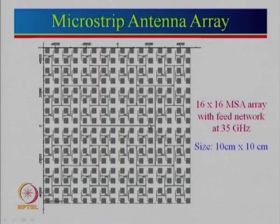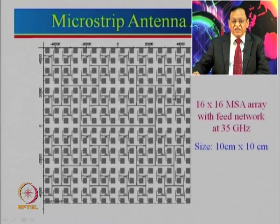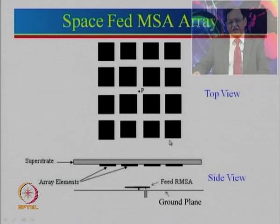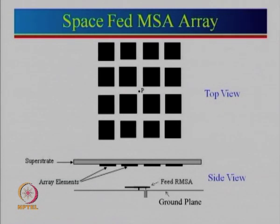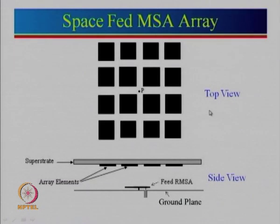This is an example of a microstrip antenna array — a 16 by 16 array with a total of 256 elements and a feed network. All these elements are fed by a microstrip line. This whole antenna was designed at 35 gigahertz, and all these elements fit in a very small size of just 10 centimeter by 10 centimeter, which is like 4 inch by 4 inch. As we move along the course we will talk in detail about how to design all these antennas and arrays. However, that feed network creates problems because of large feed losses. We also designed a space-fed microstrip antenna array, where a fed microstrip antenna radiates and excites the patches on top — so there are no feed losses.